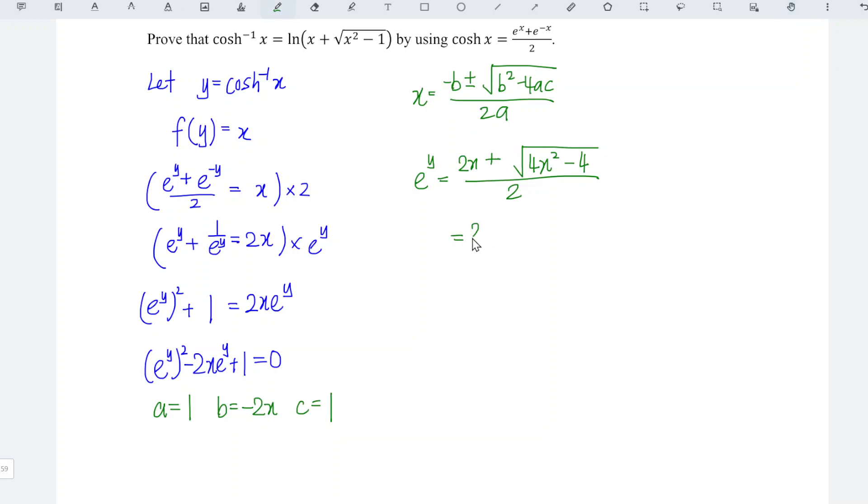And now let's simplify. We have 2x plus square root of 4x square minus 4, so common factor 4. Square root of 4 is 2. So we have x square minus 1 divided by 2. Simplify again, so we have x plus square root of x square minus 1.